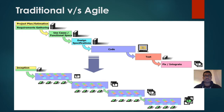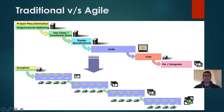In agile, all these activities still take place but in a very short, time-boxed manner known as sprints. After inception, requirement gathering, use case preparation, design, coding, testing, and integration all take place in iterations. Instead of waiting until the last stage, we keep doing all activities from the beginning and we have a shippable product at the end of every sprint.